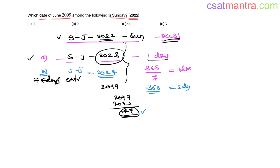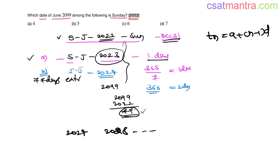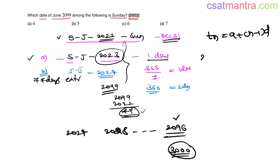To find the number of leap years, we use sequences and series: the formula a + (n-1)d. The first leap year is 2024, the second is 2028, and the last one would be 2096. Note that 2100 is divisible by 4 but we're ending at 99 only, so 2100 is not a leap year. Therefore 2096 is the last leap year.